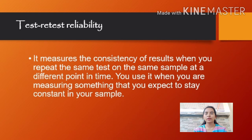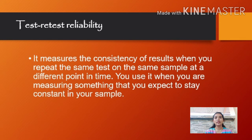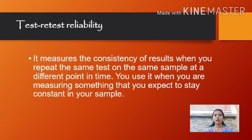The first type of reliability is test-retest reliability. It measures the consistency of results when you repeat the same test on the same sample at a different point in time. You use it when you are measuring something that you expect to stay constant in your sample. Many factors can influence your result at different points in time — for example, respondents might experience different moods or external conditions might affect their ability to respond accurately. Test-retest reliability can be used to assess how well a method resists these factors over time. The smaller the difference between the two sets of results, the higher the test-retest reliability. To measure it, you conduct the same test on the same group of people at two different points in time, then calculate the correlation between the two sets of results.